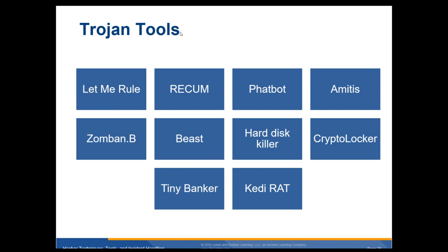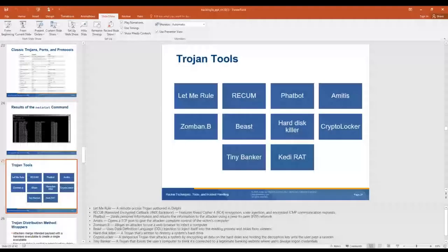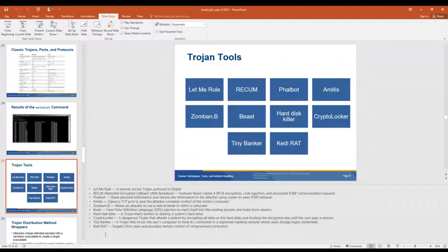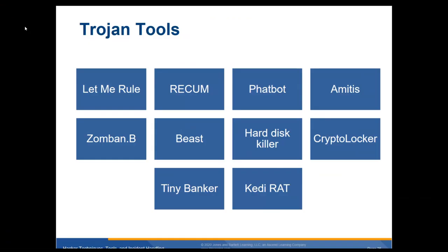Some known Trojan tools include Rulebot, Ametis, Zomban, Beast, Hard Disk Killer, Crypto Locker, and Tiny Banker. These tools each have explanations of what they do and how they operate.